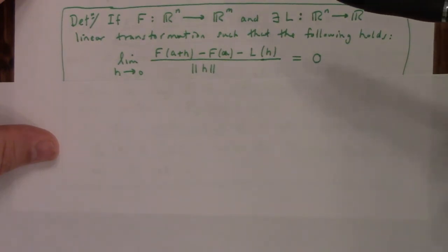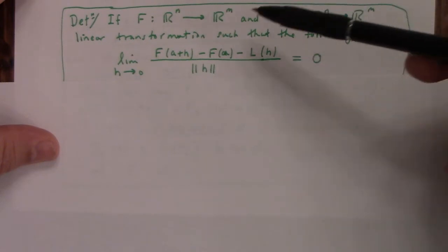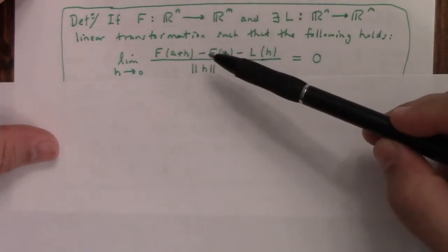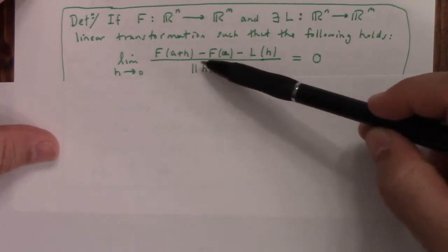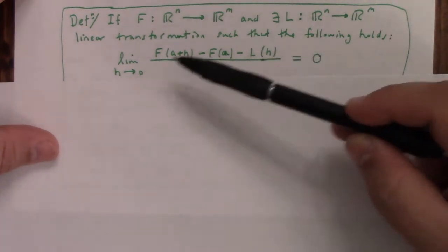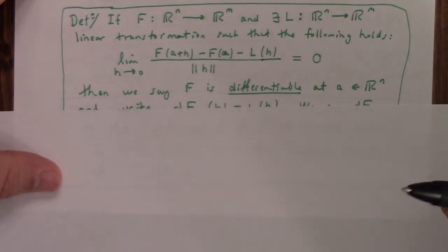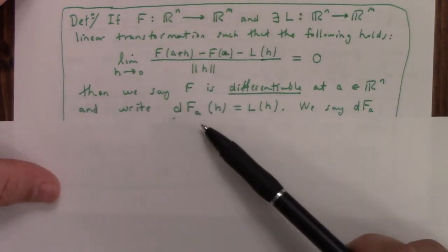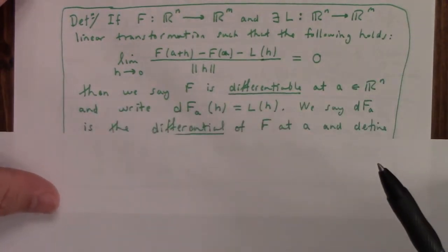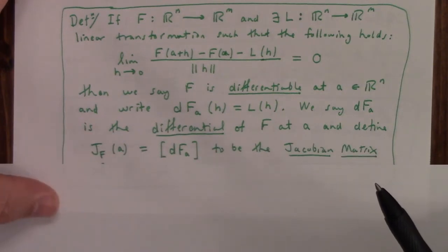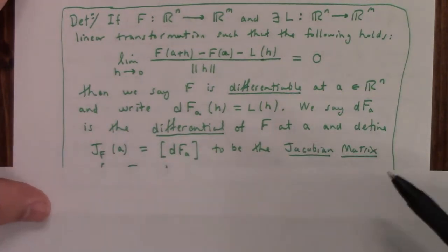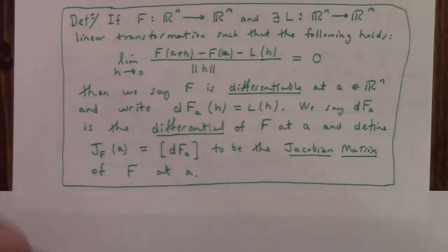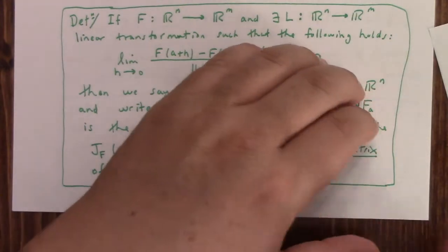So here's the definition. If you can find a linear transformation such that F(a+h) - F(a) - L(h), all divided by the norm of h, is equal to zero as h goes to zero, then the function is said to be differentiable at a, and this L(h) is called the differential of a. And we define the Jacobian to be the standard matrix of that differential at a. And that's it. That's the definition.